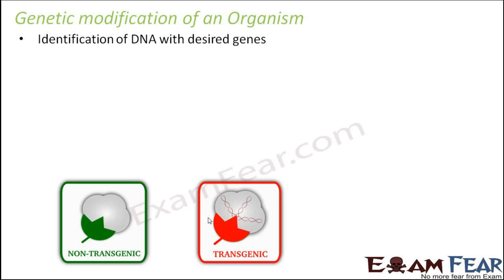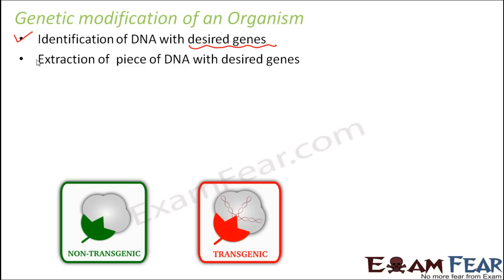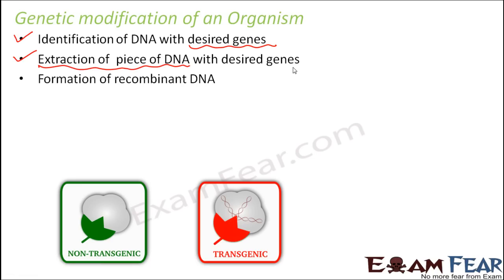First is identification of DNA with desired genes. We should know which is the desired gene or gene of interest, locate it on the DNA, and then extract a piece of DNA containing that desired gene. For this extraction we take help of the DNA scissors — the restriction enzymes — which cut DNA in such a way that the piece contains the desired genes.